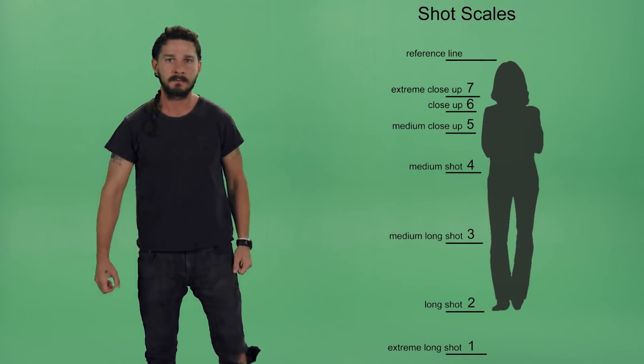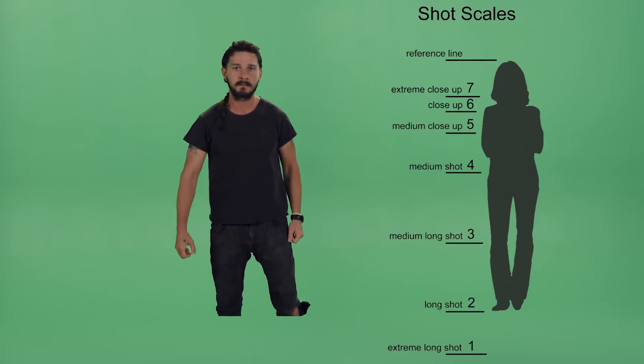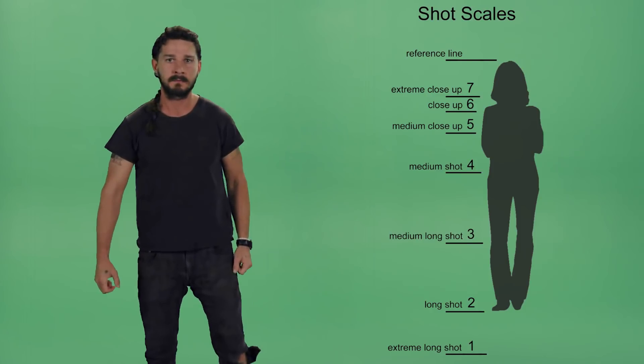This scale helps us to identify good shots. In this case, we have a medium shot of our subject. The ideal shots for deepfaking are between a 3 and a 5. Too close and the trained face will be blurry; too far and the face may not be detected at all.